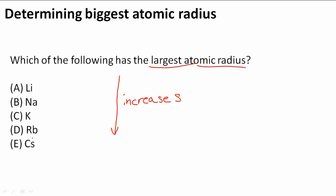The one with the biggest atomic radius is going to be Cs. Remember, as we go down the atomic radius increases.